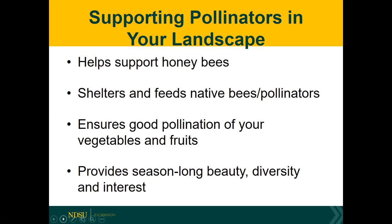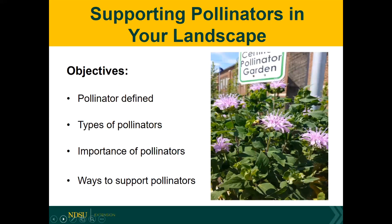Supporting pollinators in our landscape can ensure good pollination for fruits and vegetables we grow in our backyards. We can also see an increase in yields and in some cases a larger fruit or vegetable. Additionally, it provides season-long beauty and diversity as well as focal points. Today we're going to define what a pollinator is, introduce different types, talk about the importance of pollinators, and discuss some ways we can support them.